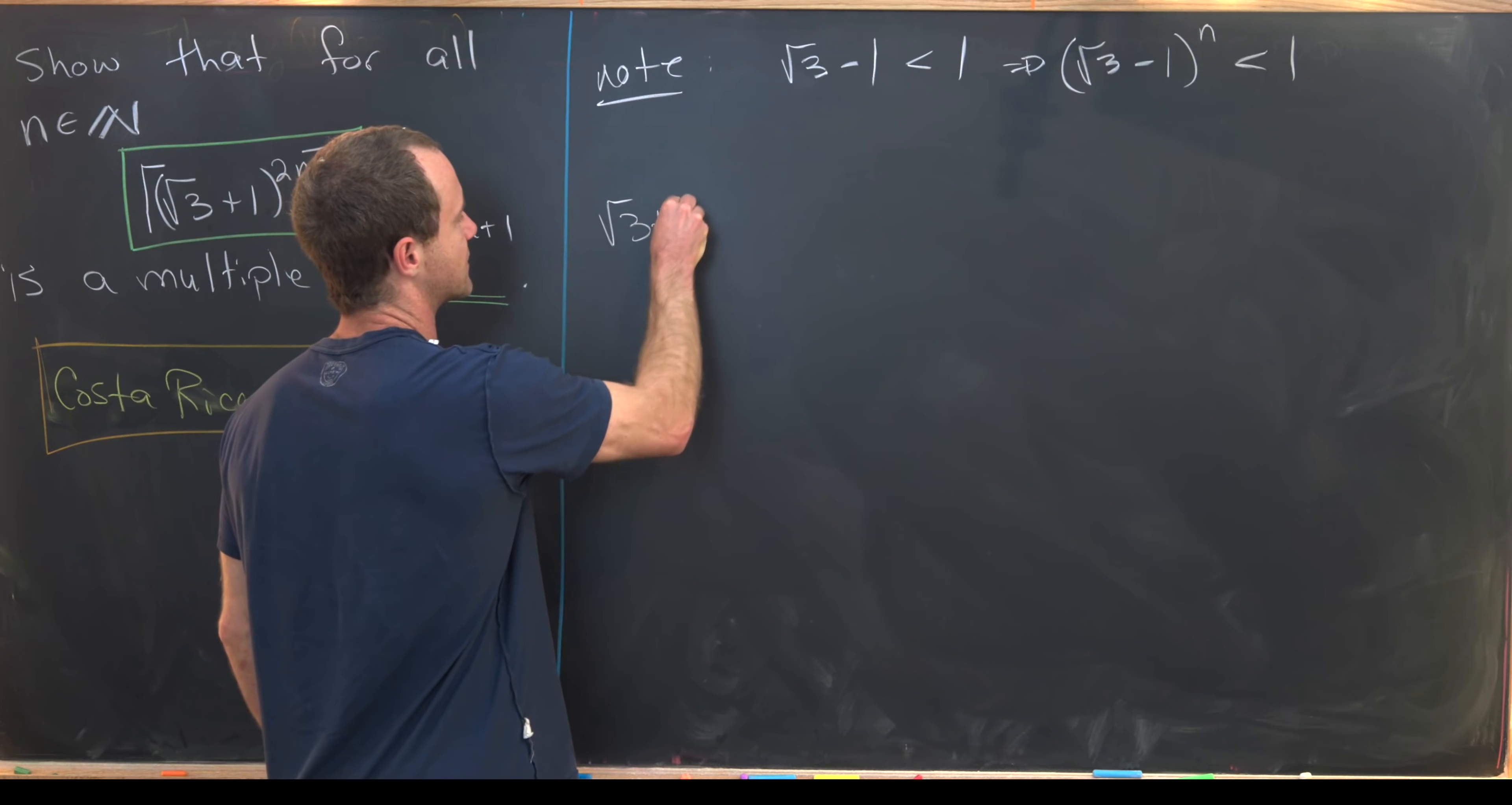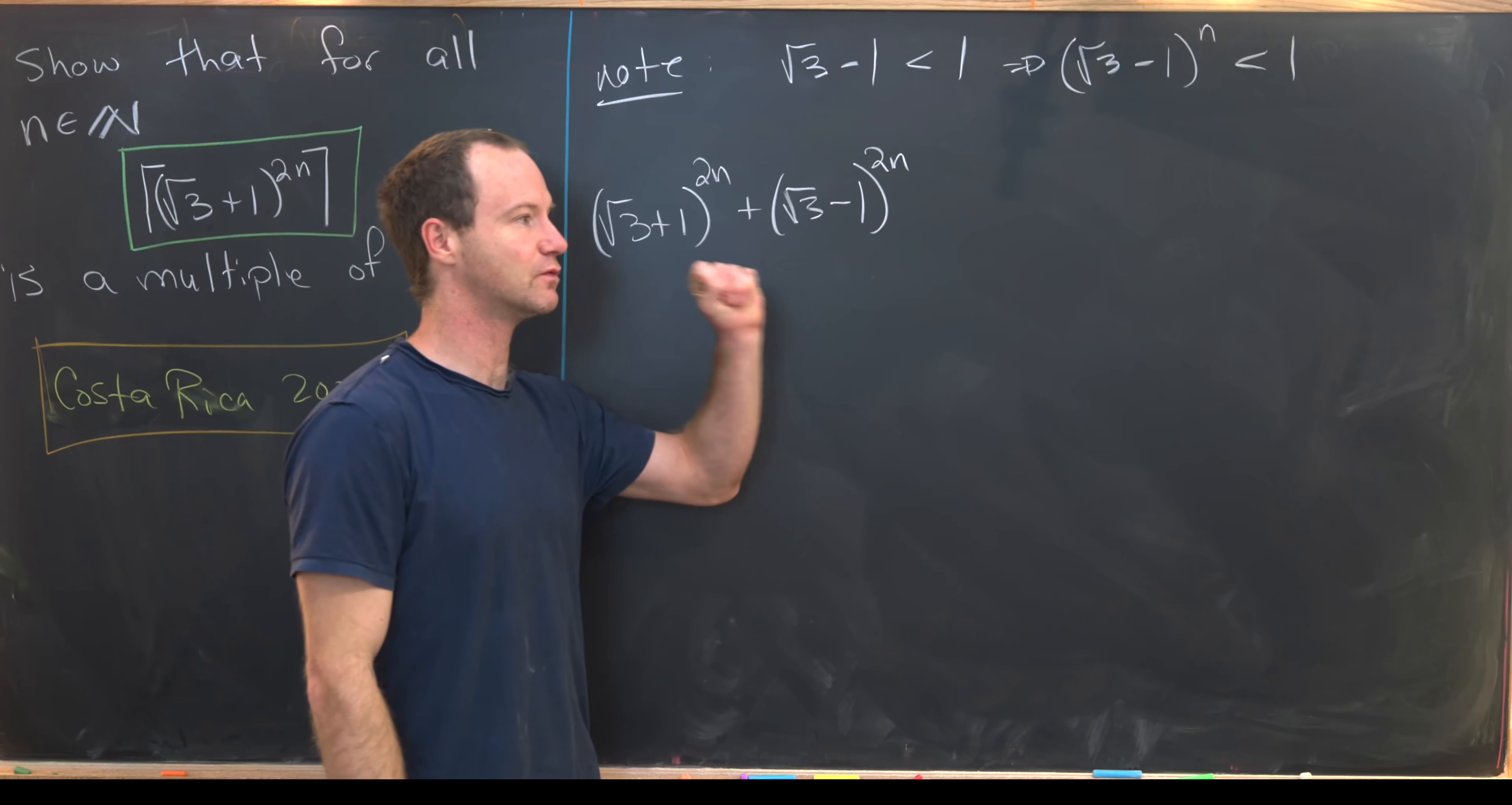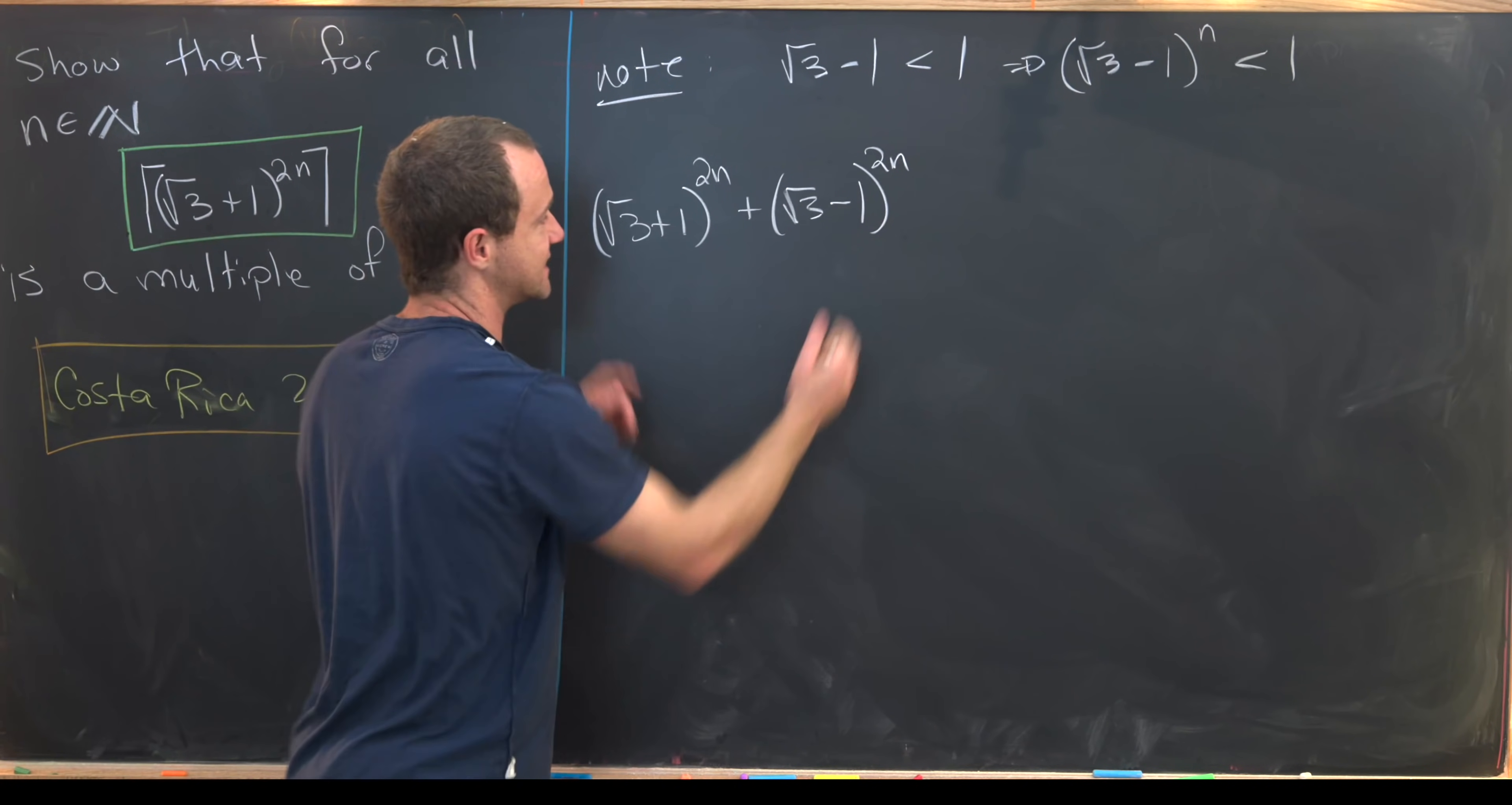So we'll look at the square root of 3 plus 1 to the 2n plus the square root of 3 minus 1 to the 2n. And I'd like to point out real quick that our goal here is that this will be an integer. And since this is an integer, well, we've got a lot of work to get there. And this thing that we're adding on is less than 1, that means that the ceiling of our goal object is just this sum right here.